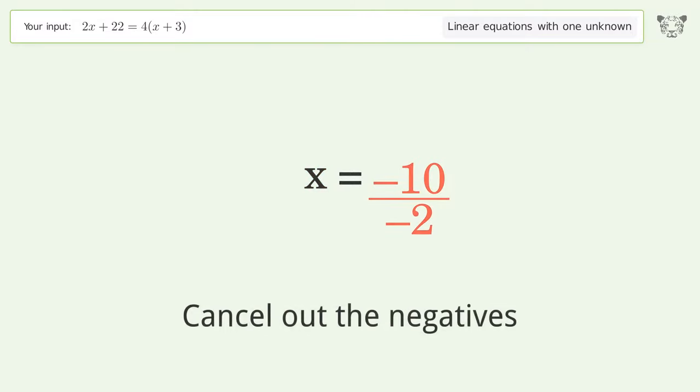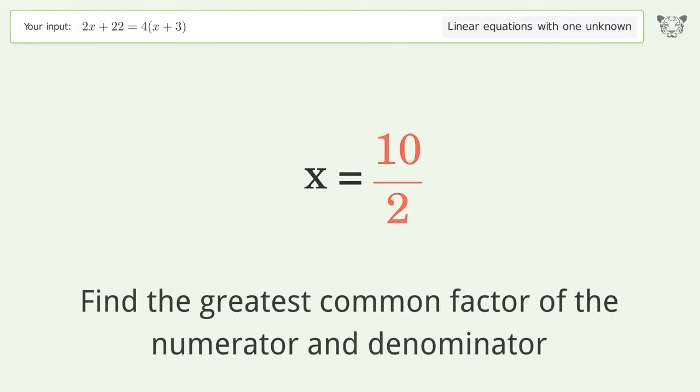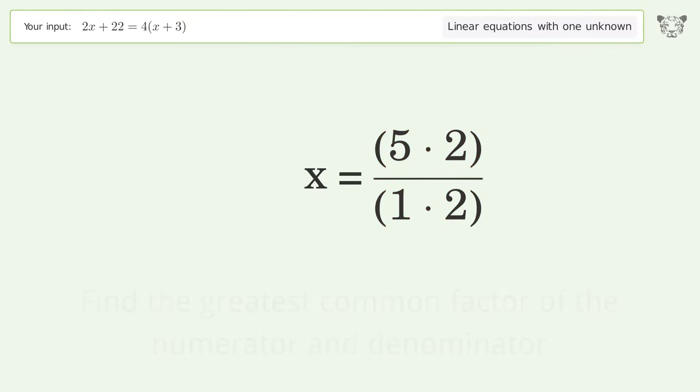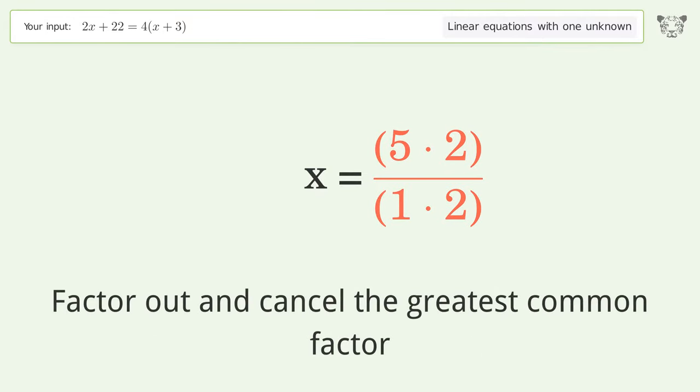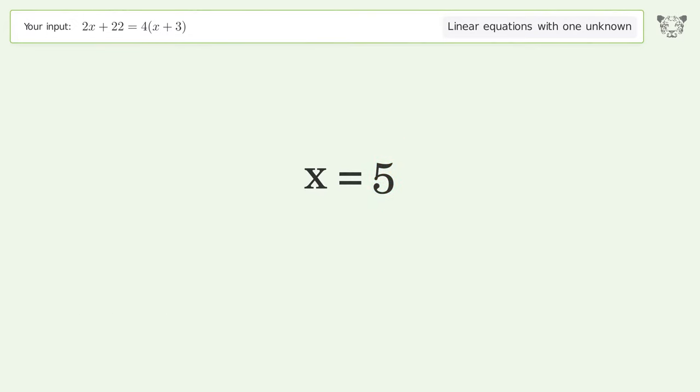Cancel out the negatives. Find the greatest common factor of the numerator and denominator. Factor out and cancel the greatest common factor. And so the final result is x equals 5.